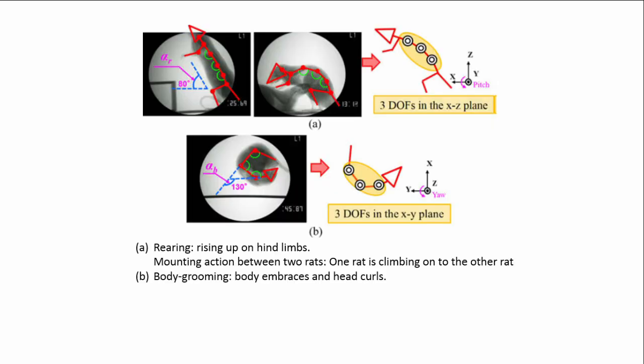First, rat behavior in detail has been analyzed using visible x-ray video images taken using a fluoroscopic unit to observe rearing, mounting, and body grooming actions.